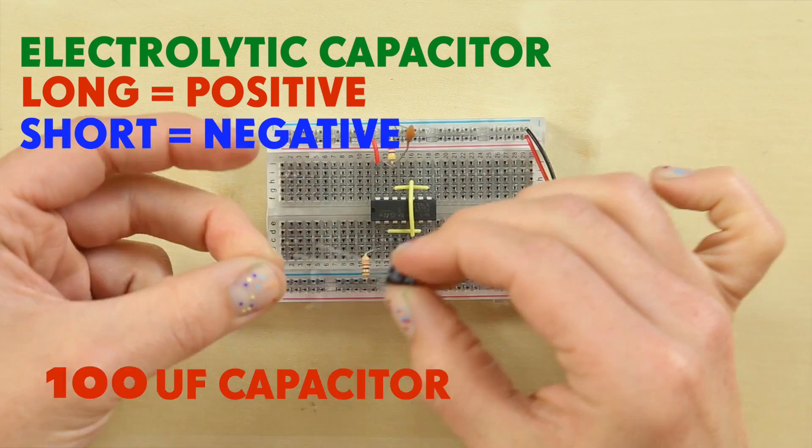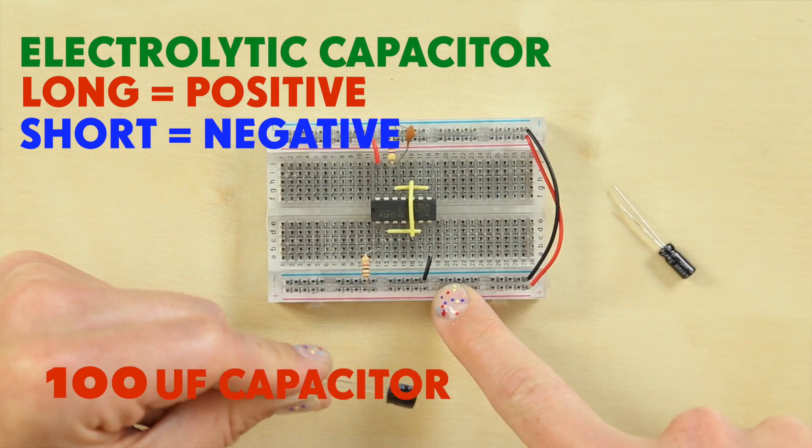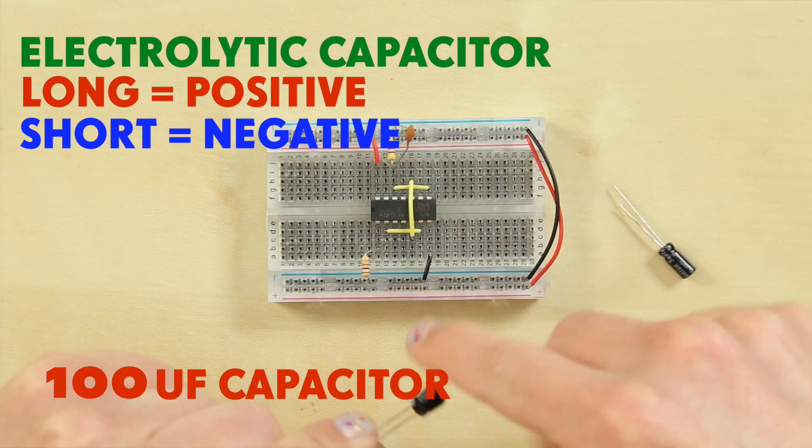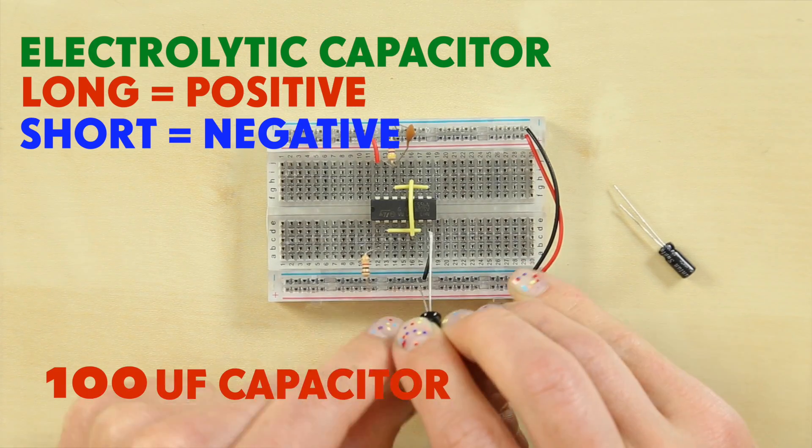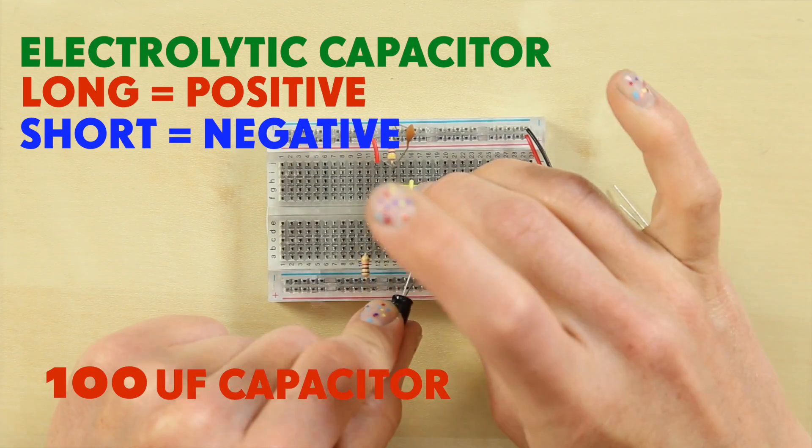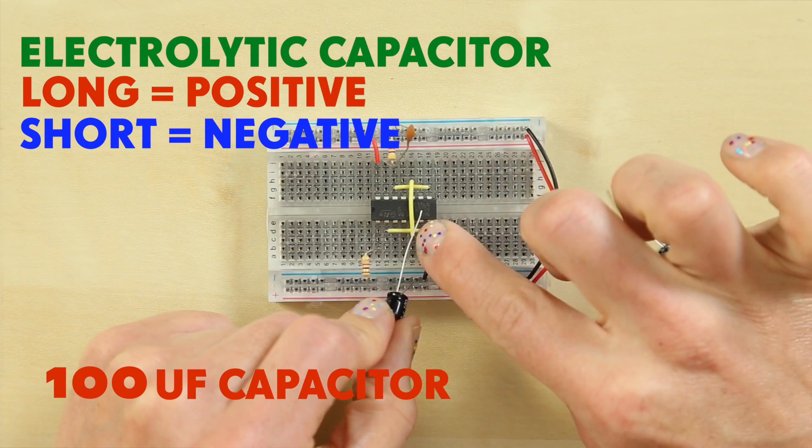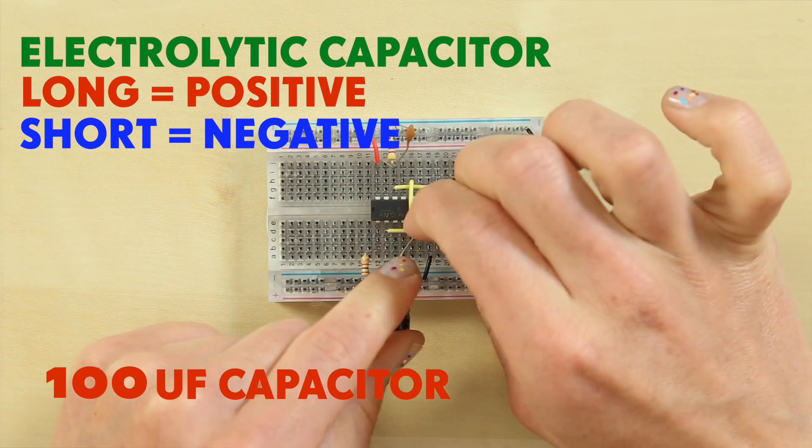So the 100UF capacitor wants to be near the top of your board near this little black jumper wire. Line the negative leg up with the negative rail and pop that in the outside and then you want to connect this to pin 6 of your IC chip which is row 17.